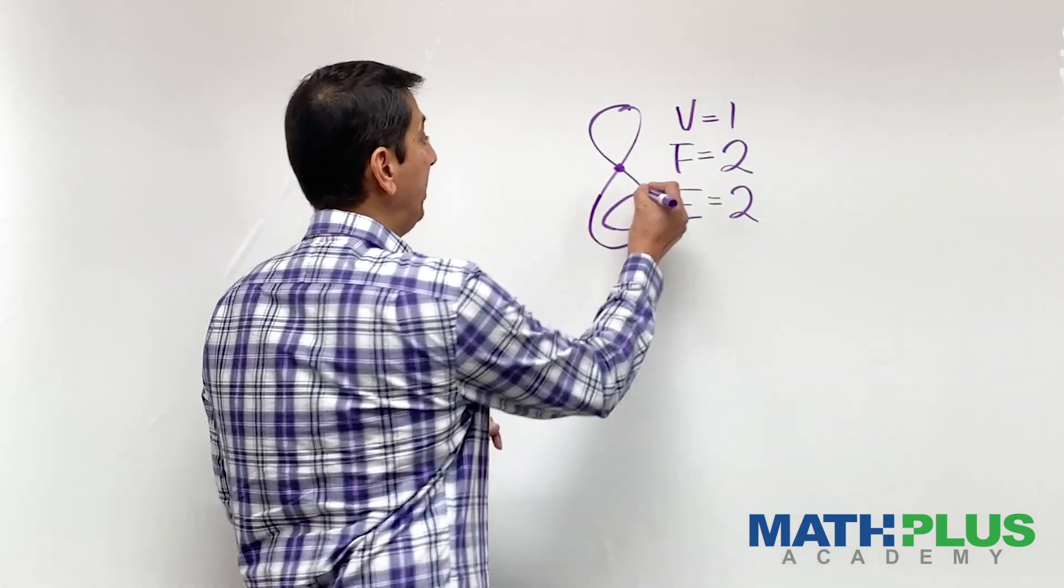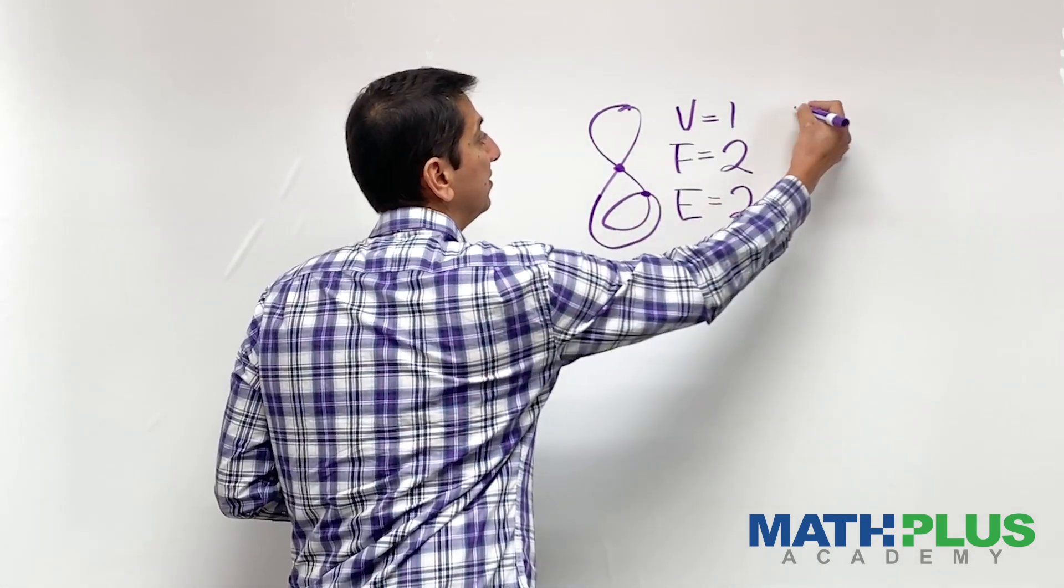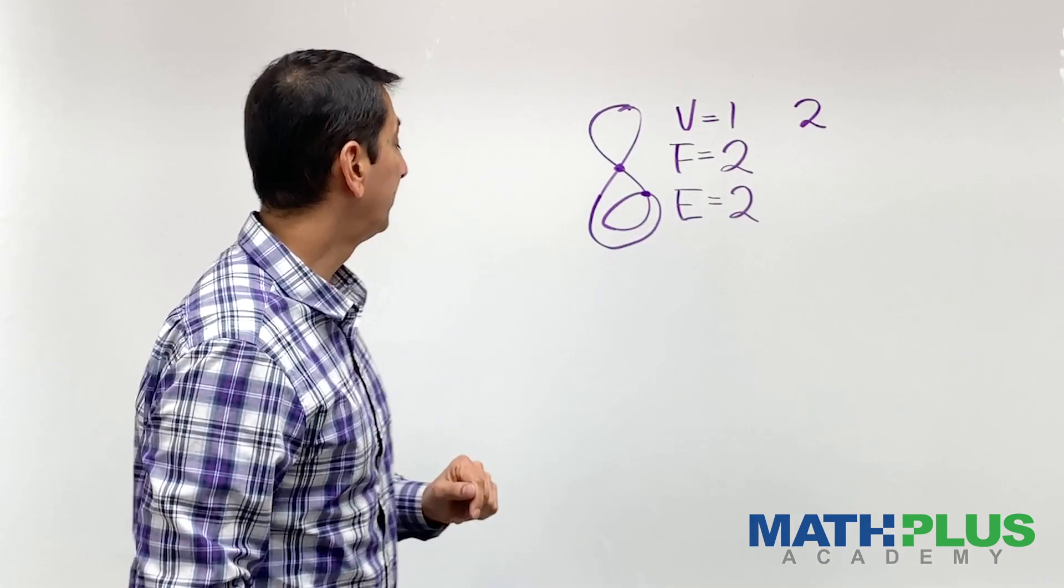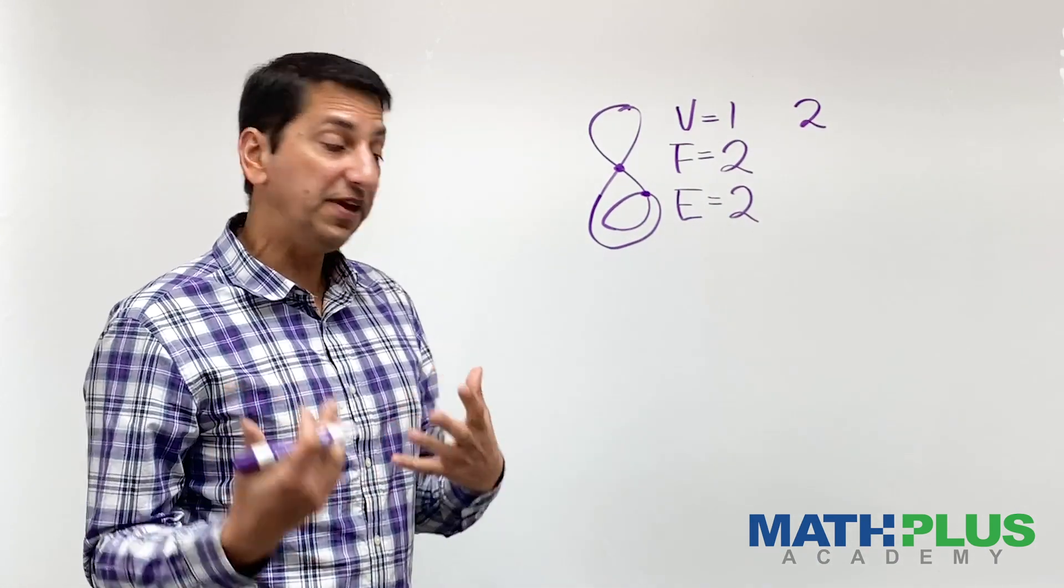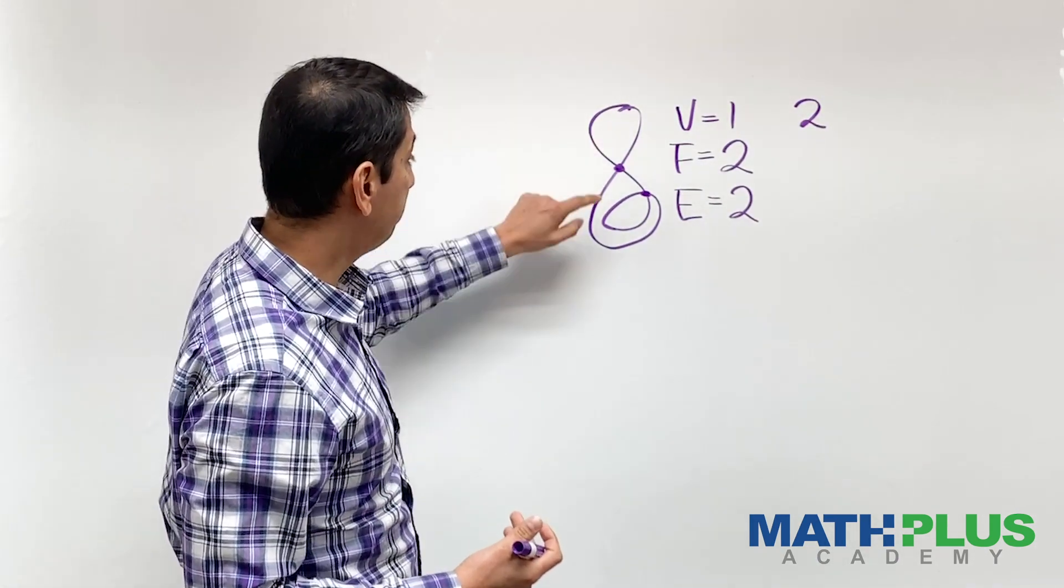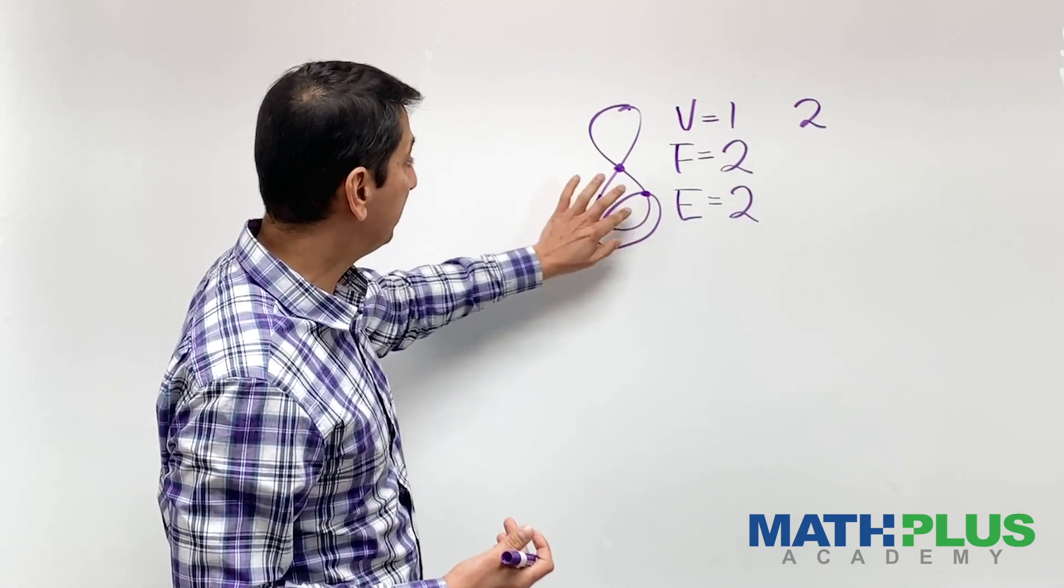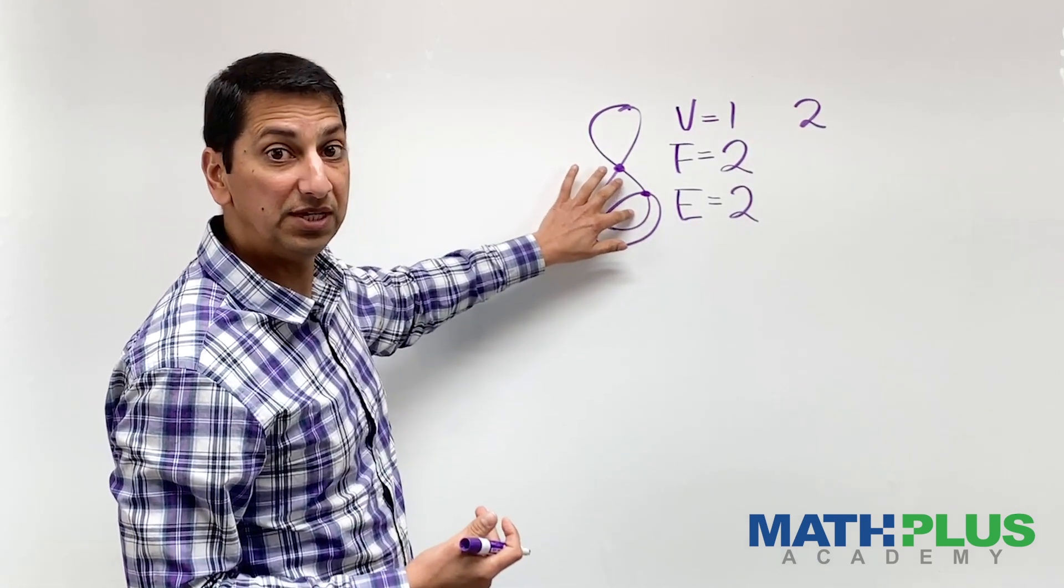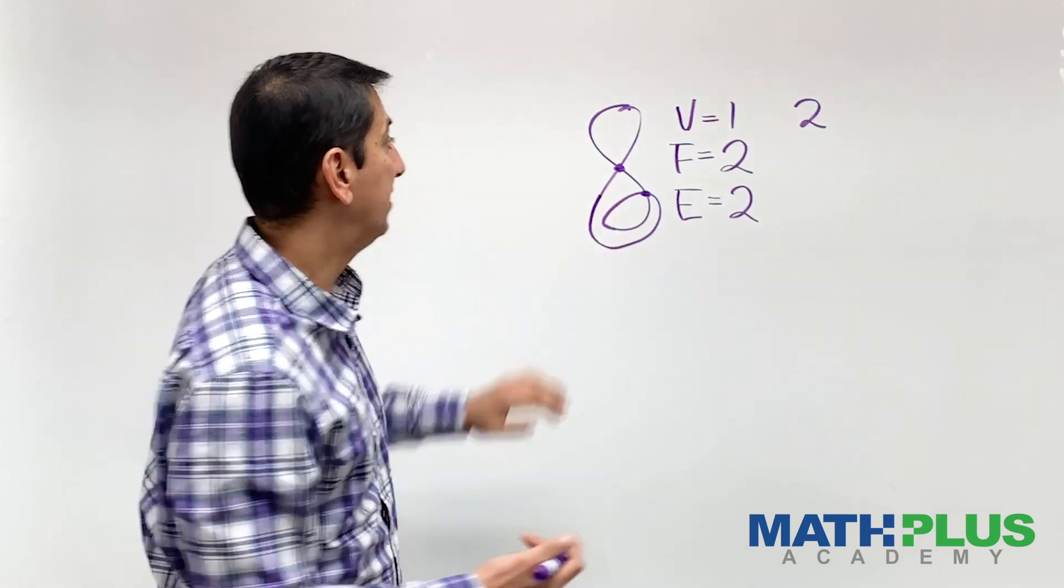I've created one new vertex. What about the faces? Well, I still have the one on the top. I kind of have the one on the bottom but now it got split into two. So now I have one, two, three faces. So I've added a vertex and a face.